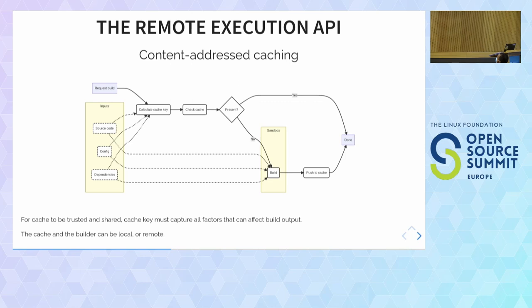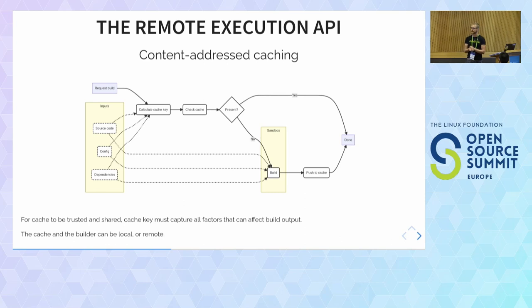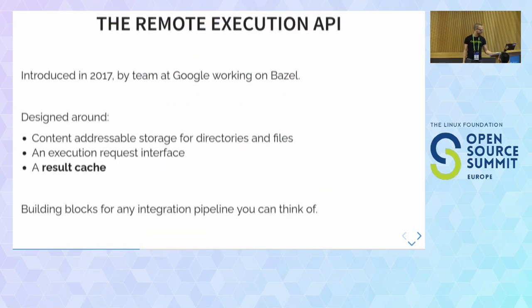A couple of important things: the cache and the build don't need to happen locally — the cache can be on a remote server, the build can be a build farm. It's also very important to capture all inputs, because otherwise we might not notice when something important has changed. To ensure full reproducibility, we must run the build in a controlled sandbox environment — think something like a container — controlling devices, limiting network access, and setting the time to a fixed value. That allows us to trust the cache.